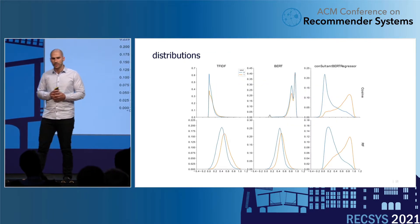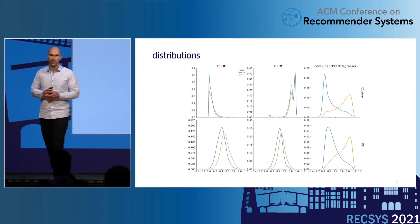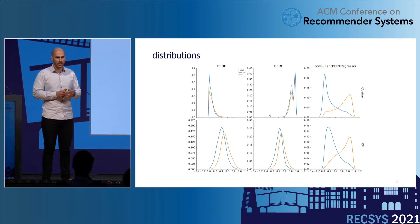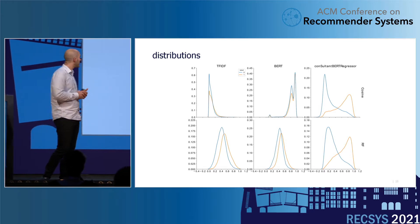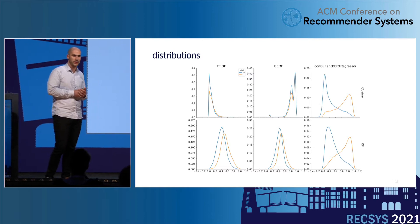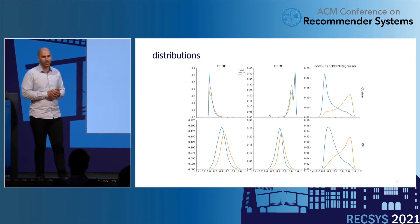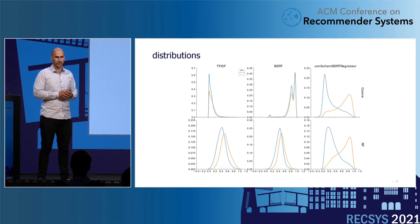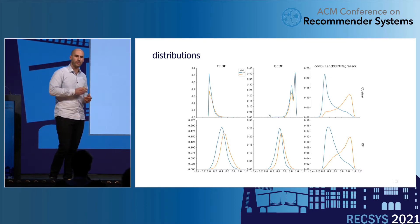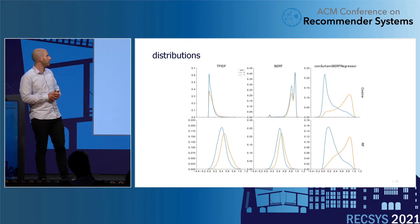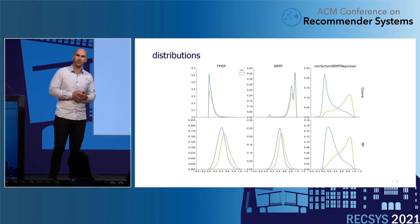Another way to look at the results is to examine the distributions. The blue represents negative pairs and the orange represents positive pairs. The two left columns — TF-IDF and BERT — find it very difficult to differentiate between those two distributions, especially with cosine similarity in the top row. In the bottom row there's a bit of differentiation, but still hardly any. On the right column, on the other hand, you see a very nice differentiation between the two samples.